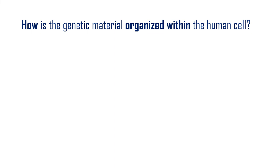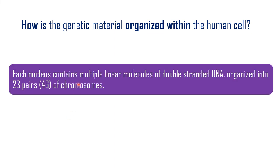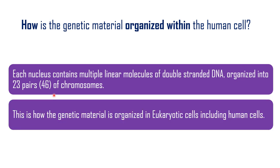Each nucleus contains multiple linear molecules of DNA organized into 23 pairs. Of these 23 pairs, one set comes from the mother and the other set comes from the father, forming a total of 46 chromosomes in a normal human cell. This is how the genetic material is organized in normal eukaryotic cells, including human cells.